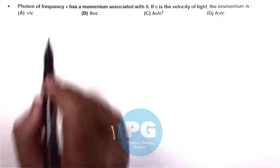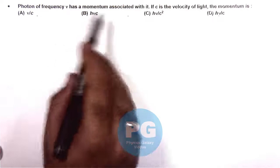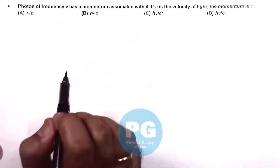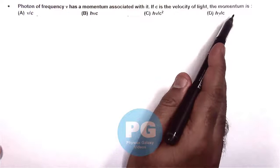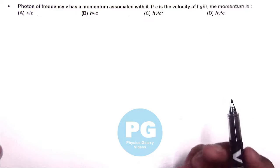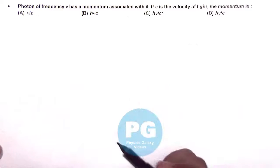In this question it says the photon of frequency nu has a momentum associated with it. If c is the velocity of light, we need to check the momentum, the expression which gives us the momentum.